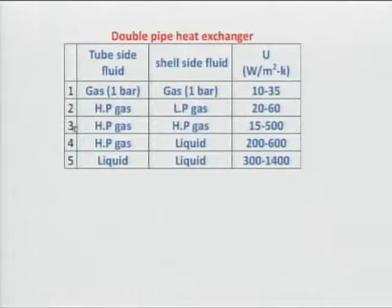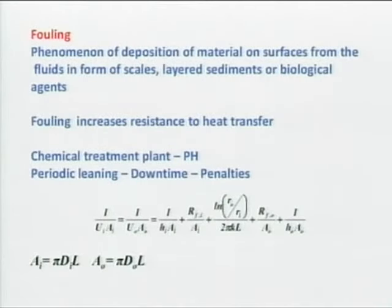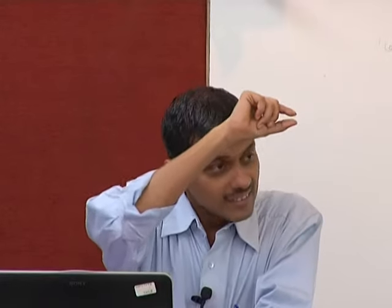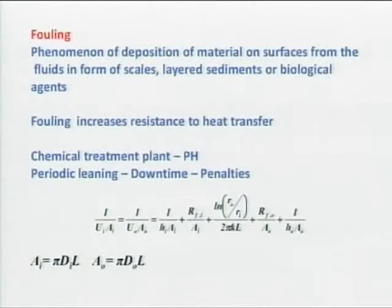Fouling is very common to us because we have heard it so many times. Fouling increases resistance. Fouling is the sedimentation or because of some chemical reaction, some scales are being formed. The conductive resistance, which I was neglecting because of wall thickness alone, is going to get worse because of these scales. How do I get the fouling resistance? I have put here R_FI and R_FO.